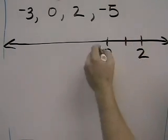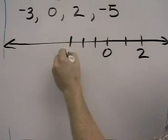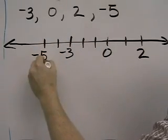And then two would be right there and negative one, two, three, negative three, negative four, negative five would be right there.